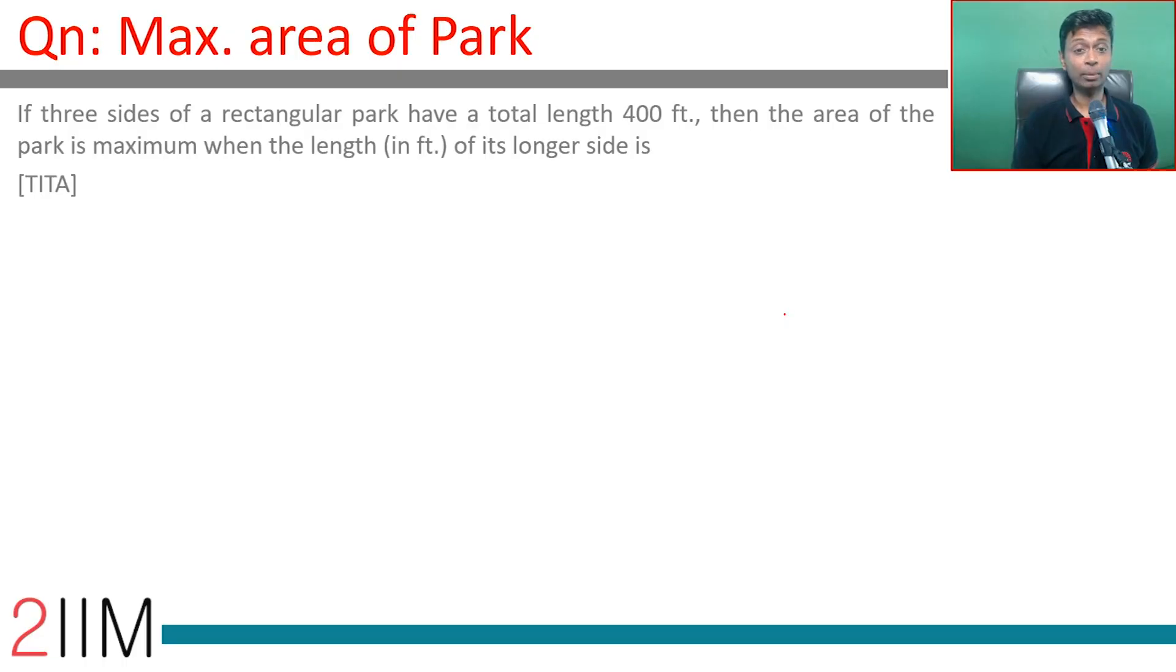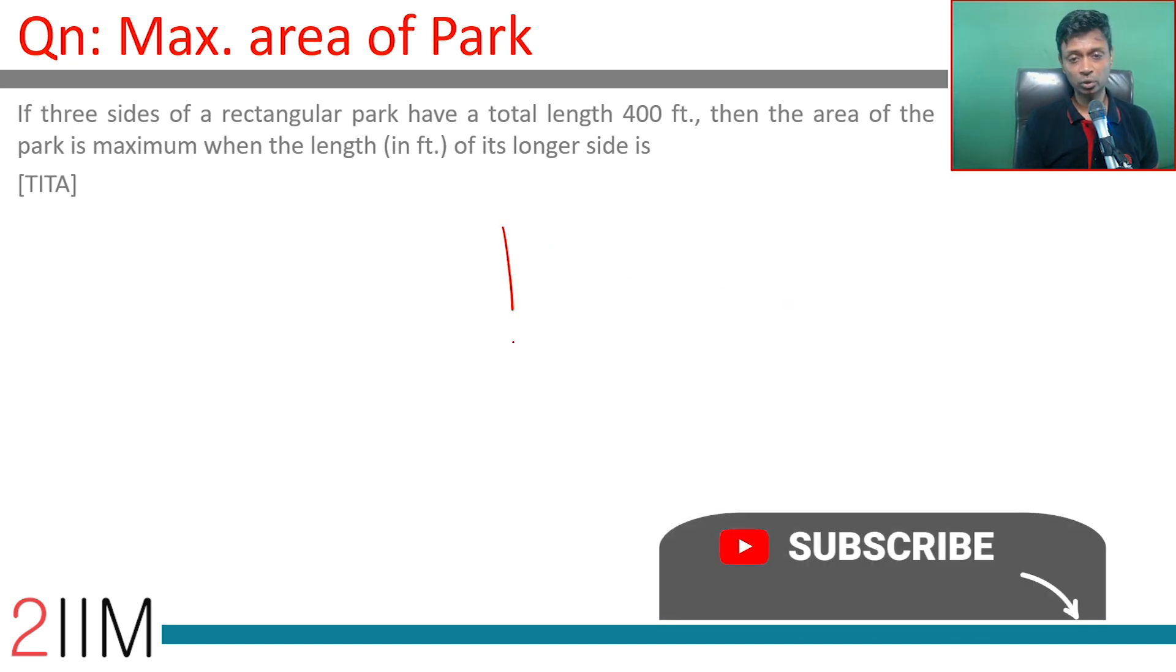If three sides of a rectangular park have a total length of 400 feet, then the area of the park is maximum when the length of its longer side is...